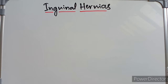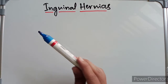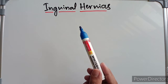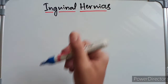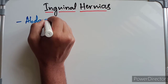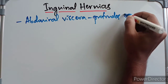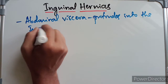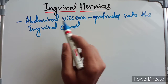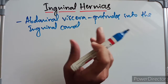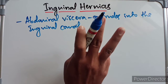Welcome. In this video we are going to discuss the anatomy of inguinal hernias — the different types, direct and indirect, and the differences between them. An inguinal hernia is a protrusion of the abdominal viscera into the inguinal canal. It may be a loop of intestine or other abdominal viscera that protrudes into the canal. Clinically, it presents as a pear-shaped swelling above or medial to the pubic tubercle, above the inguinal ligament. There are two types: direct and indirect.